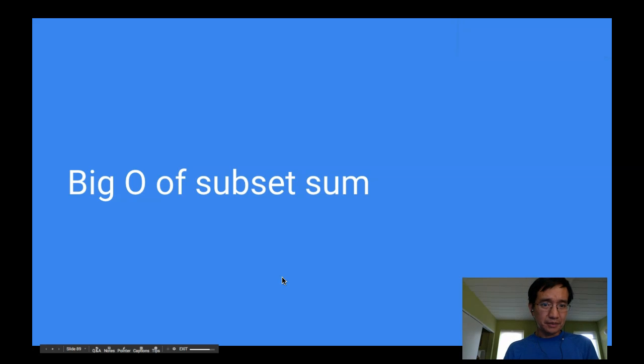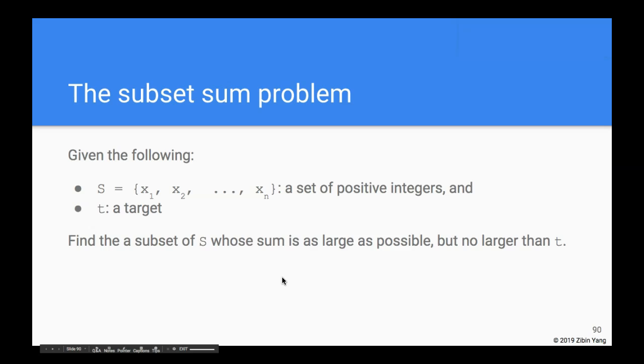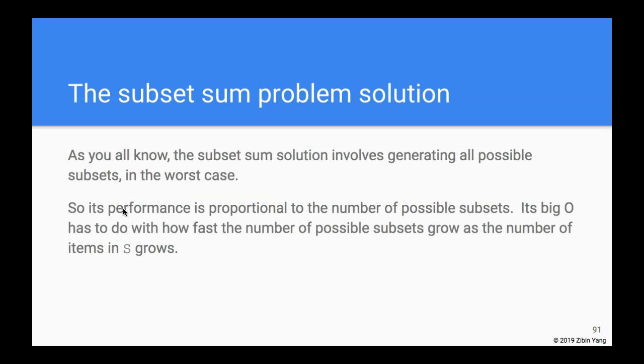In this video we're going to discuss the Big O of the subset sum problem. You're all very familiar with the subset sum problem. Just as a reminder, it's basically given a set of some numbers and a target. The problem is to find a subset of S such that the sum is as big as possible but still less than or equal to the target.